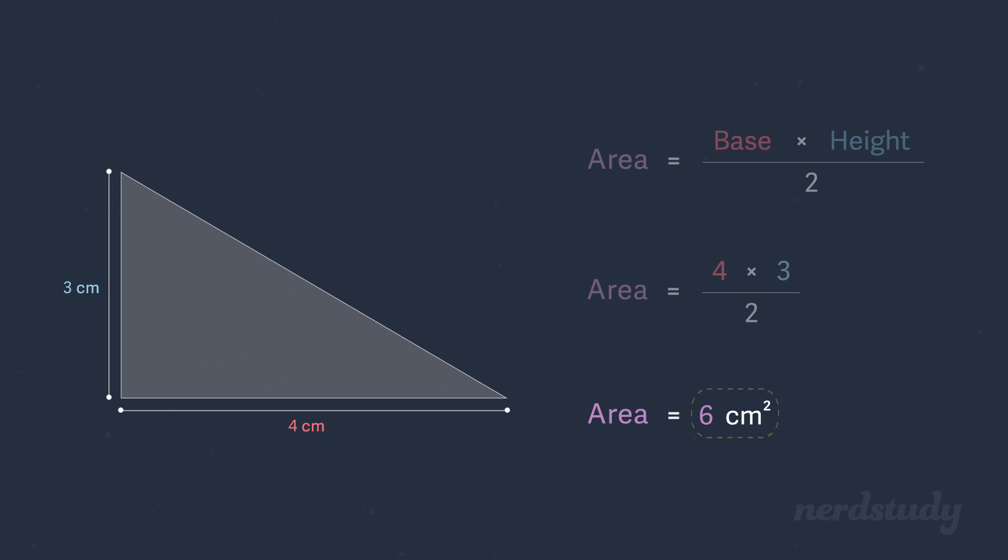Notice here that for area we say unit squared. So if we were measuring in centimeters, we would say centimeters squared, or for example meters squared if we were measuring in meters. That was easy, right? Let's try another example.